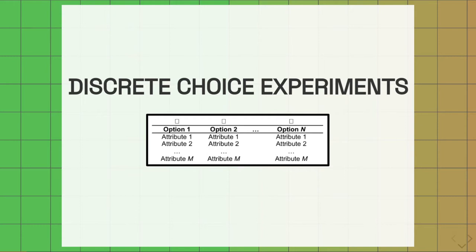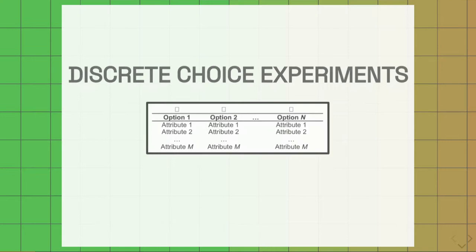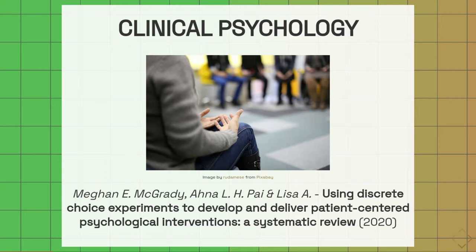Today I'm going to be talking about some work I've been doing with discrete choice experiments, which is an experiment where we present a number of different options on the screen, and each of those options varies in a number of different attributes. These kinds of discrete choice experiments have been used in a lot of different contexts. This is one example from clinical psychology, a systematic review of DCEs to develop and deliver patient-centered psychological interventions.